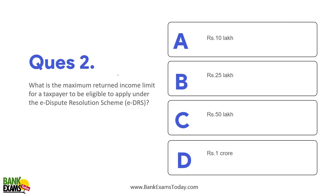What is the maximum returned income limit for a taxpayer to be eligible to apply under the EDRS — E-Dispute Resolution Scheme? If you are getting any income tax case, for smaller cases where the annual income is less than 50 lakhs, then you can take up the EDRS scheme. You can raise your disputes and answer them online only — no need to visit the income tax office. So the limit is 50 lakhs.